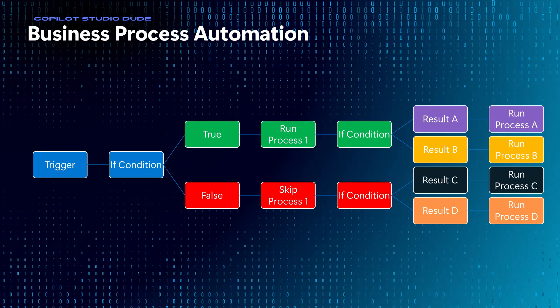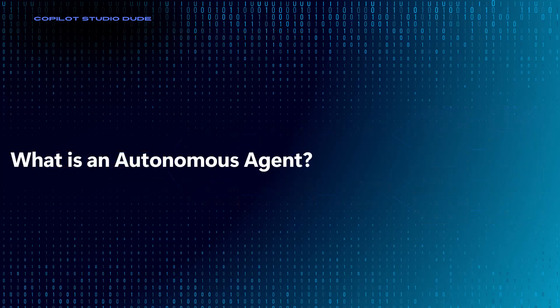This is very different than autonomous agents. Business process automation is scripted, whereas an autonomous agent is not a scripted experience. It uses an AI model to decide how to move about the different tools that it has at its disposal.